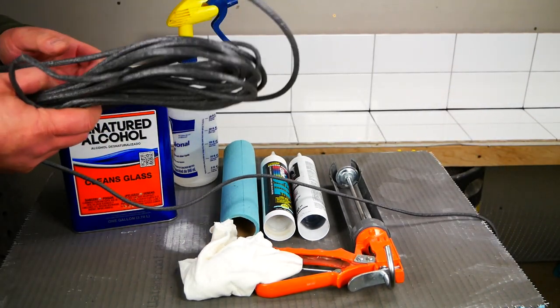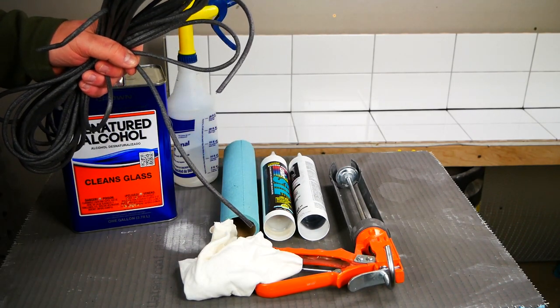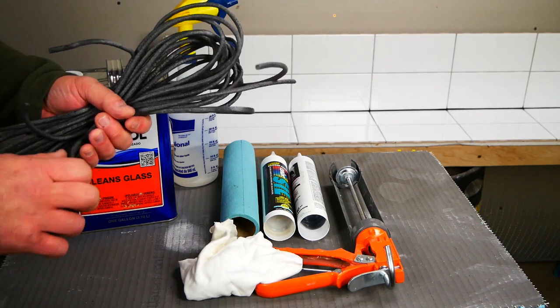This is called backer rod, and it's foam. I'm going to put that in the caulk joint, and it's just something that helps the performance of the caulk joint.